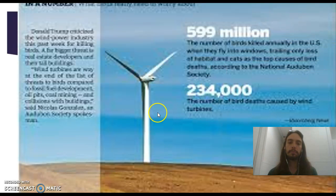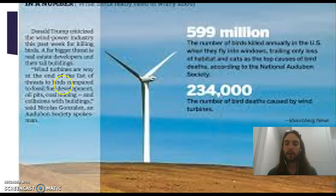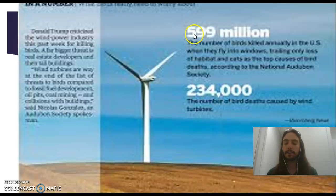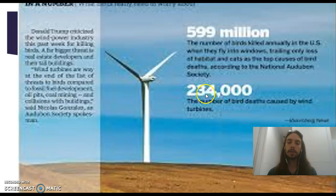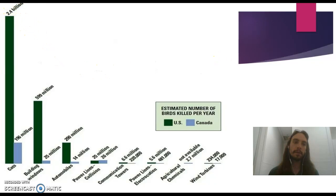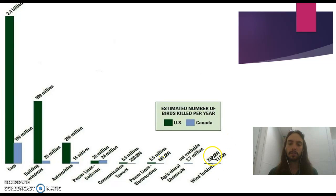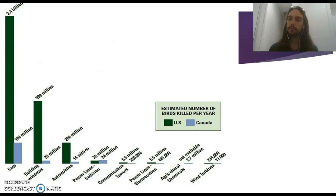Donald Trump claimed wind farms are killing birds, asking why aren't we looking at that. Yes, birds are killed — but 599 million birds are killed by flying into windows like skyscrapers, and only 234,000 are killed by wind farms. Meanwhile, 2.4 billion birds are killed by cats in the U.S. alone. So if that's the argument against wind turbines, the data needs a closer look.